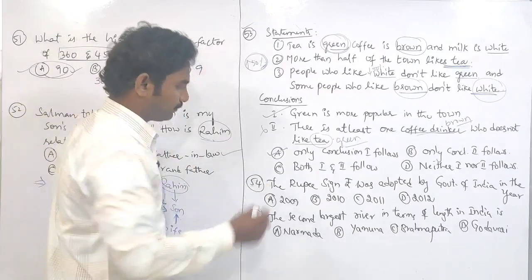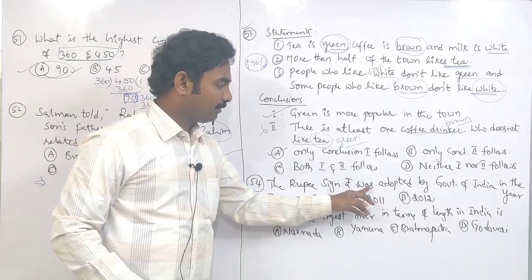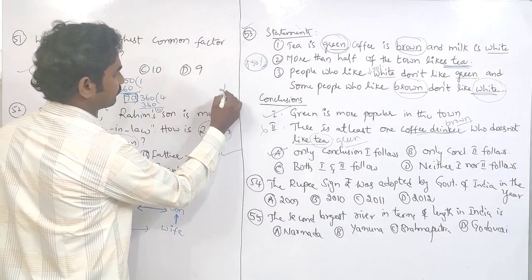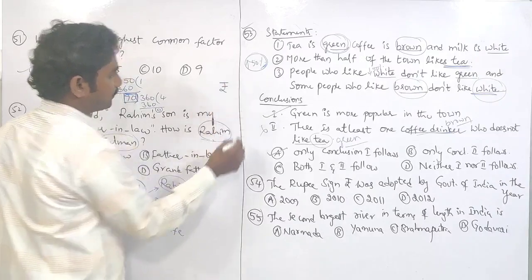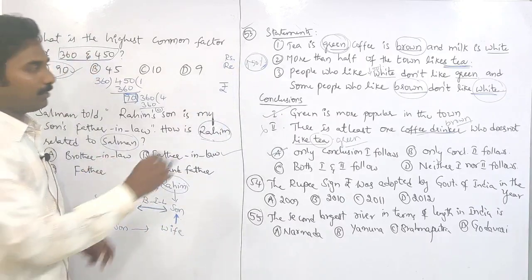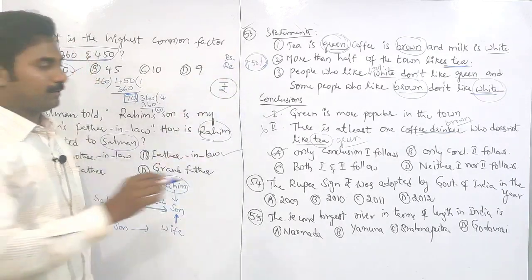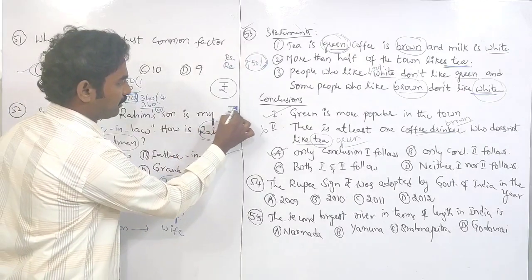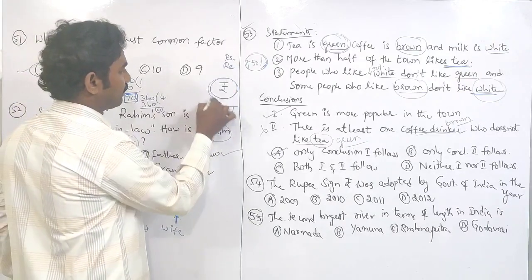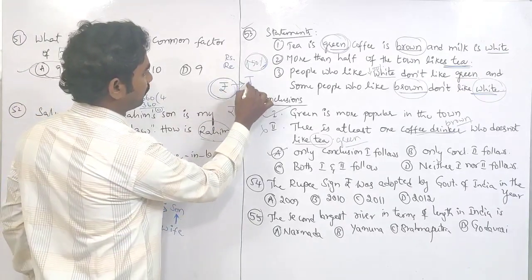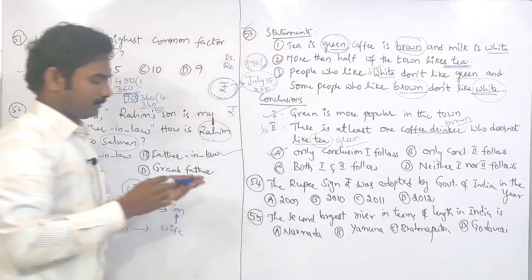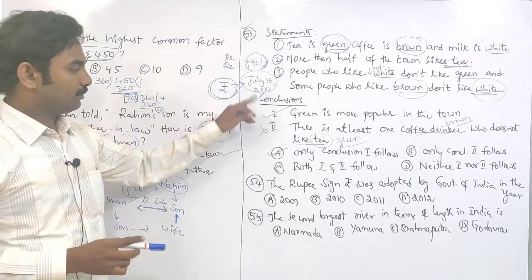Question number 54: the rupee symbol was adopted by the Government of India in which year? Previously the rupee symbol was RS or RE. Now the rupee symbol is a new one — like the Hindi letter for Rupaya. This symbol was adopted on July 15, 2010 by the Government of India.